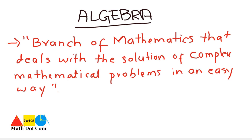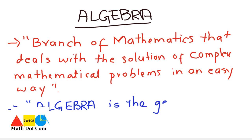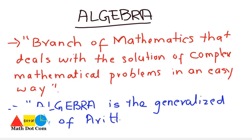You can also define algebra as the generalized form of arithmetic. Before algebra, we have studied most of the concepts in an arithmetic form. When we generalize the arithmetic, it becomes algebra. So algebra is the generalized form of arithmetic.